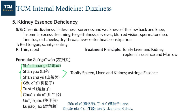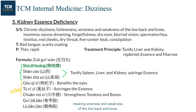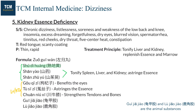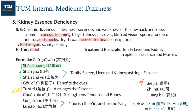Gou Qi Zi treats dry eyes or blurred vision. Tu Si Zi astringes essence, treating spermaturia. Chuan Niu Xi focuses on the tendons and bones, treating soreness and weakness of the low back and knees. Gui Ban Jiao and Lu Jiao Jiao are animal substances that nourish yin and anchor yang. As essence is a yin substance, in severe conditions there may be yin deficiency heat signs and symptoms. In that case, we can add empty heat-clearing herbs such as Bie Jia, Zhi Mu, or Huang Bai.